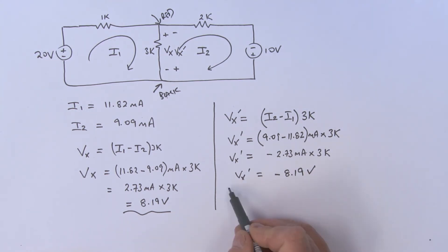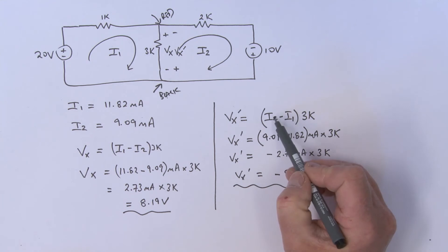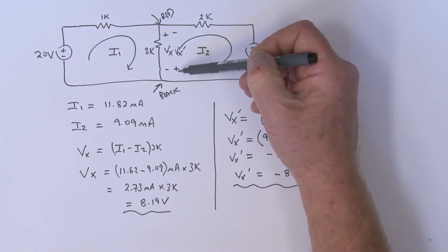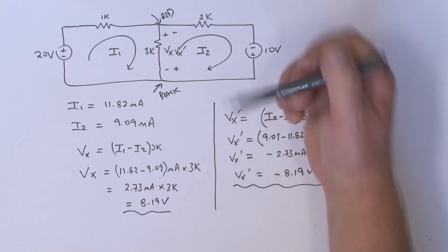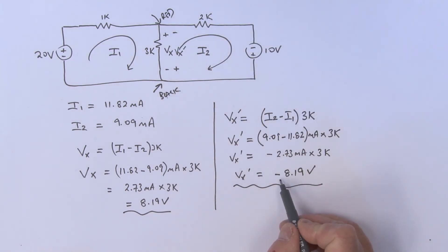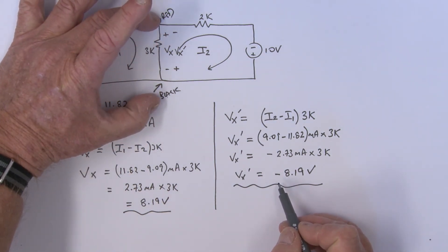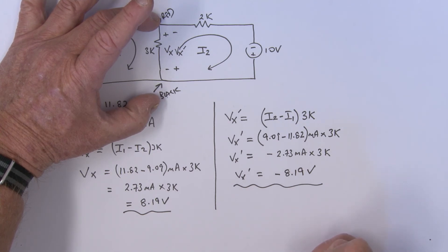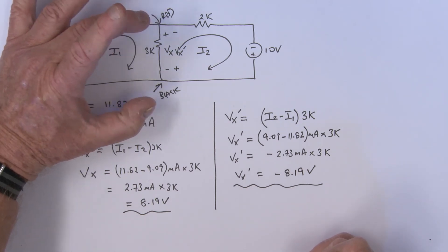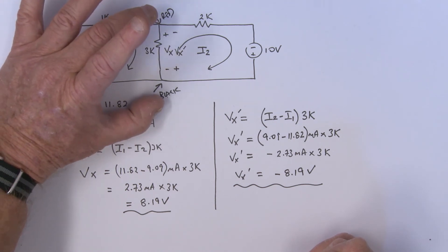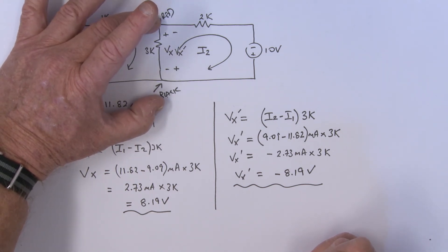Well, because when I worked this out using I2 as the lead mesh current, that defined my voltage as being plus-minus. That's why I got a negative number, because the actual voltage between here and here is really plus 8.19 volts. So if I put my meter plus-minus here, I would actually be measuring plus 8.19 volts. So I just felt that point needed a little bit of clarification.